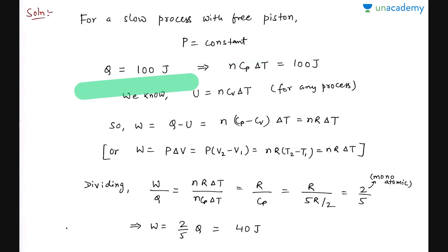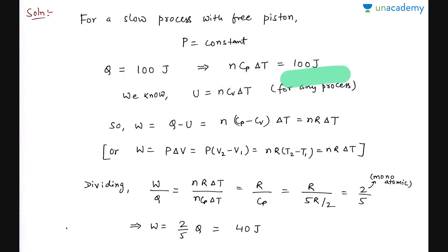It is given that Q = 100 J is the heat supplied, and during that time the temperature increased by ΔT, and the number of moles is n. We know that in any process, heat added is equal to nCΔT. The value of C will depend on the process — if it is a constant pressure process, then C will be Cp.